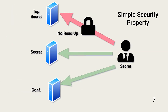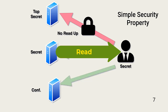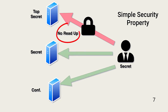The simple security property of the Bell-LaPadula model prohibits subjects with an assigned security level from reading data at a higher level. This subject is assigned a security level of secret. He's allowed to read data on the bottom two resources, or objects, if he has a need to know. He cannot read up — in other words, he is blocked from accessing top-secret data.